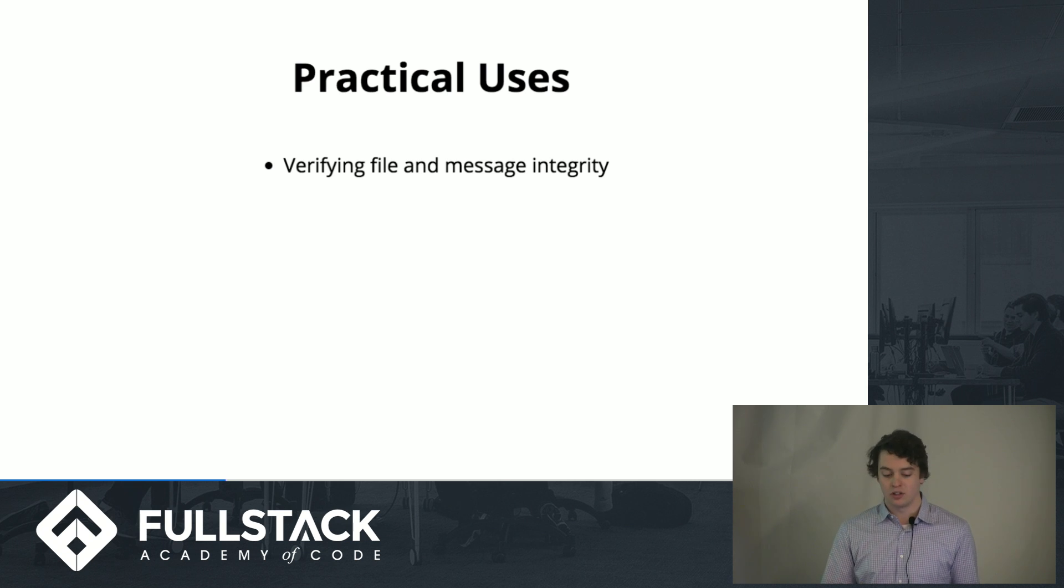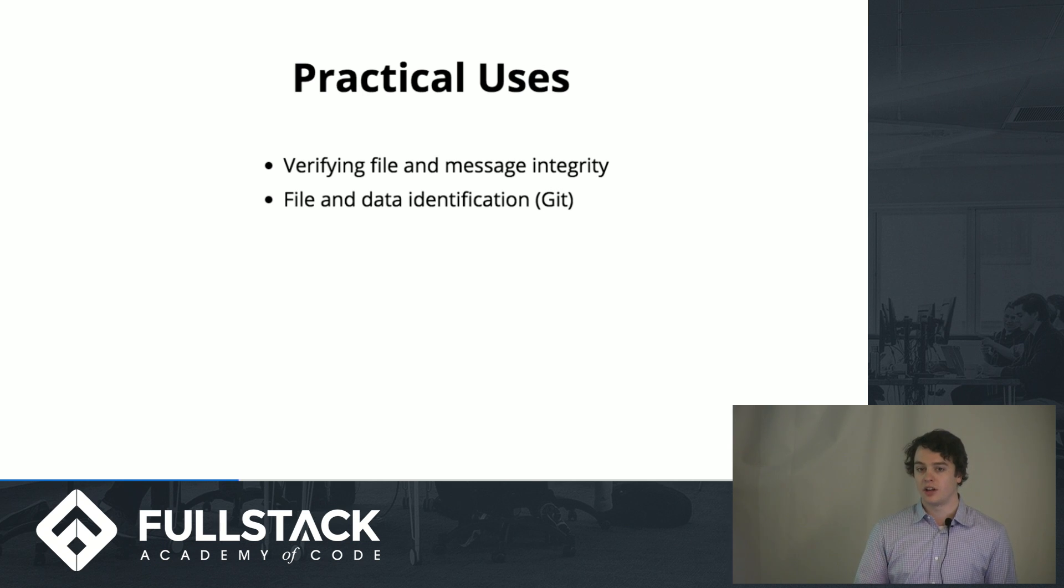It's also used in file and data identification, which is a similar offshoot. And it is used by Git. Git can actually track whether you have changes in files that need to be committed because it can hash the text content of your file. Even if you have 10,000 lines of code in one file and you just change one variable name, the resulting digest output will be completely different, so it knows it has to stage this file to be committed again. Git internally stores your files as these objects, and their name will be their SHA-1 digest value.